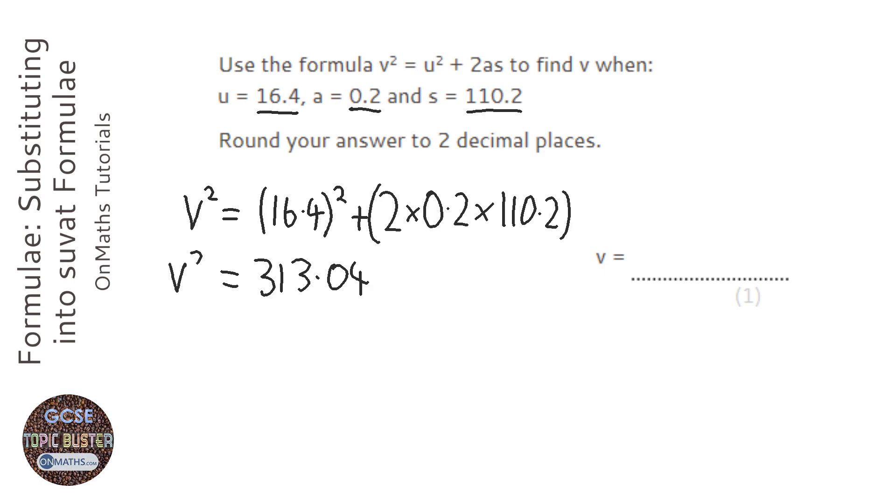The problem is that's what v squared equals. So to find v, I've just got to square root both sides. So I've got to square root that answer.